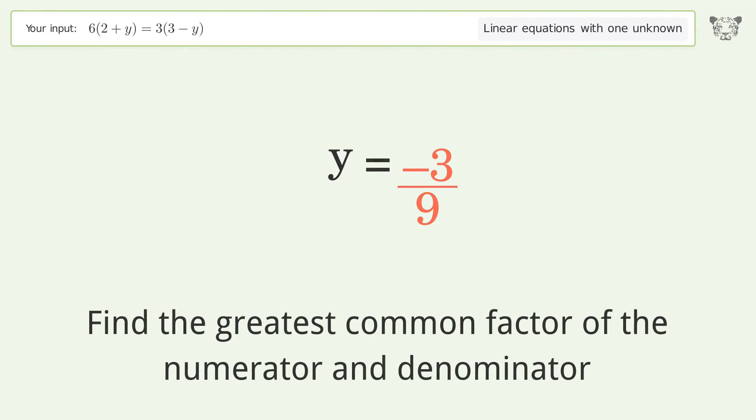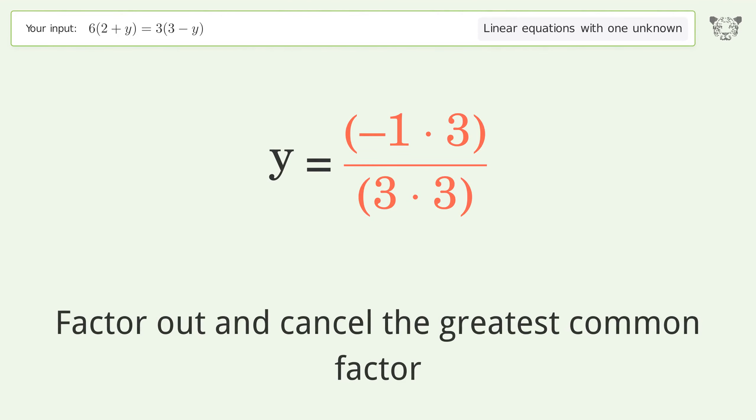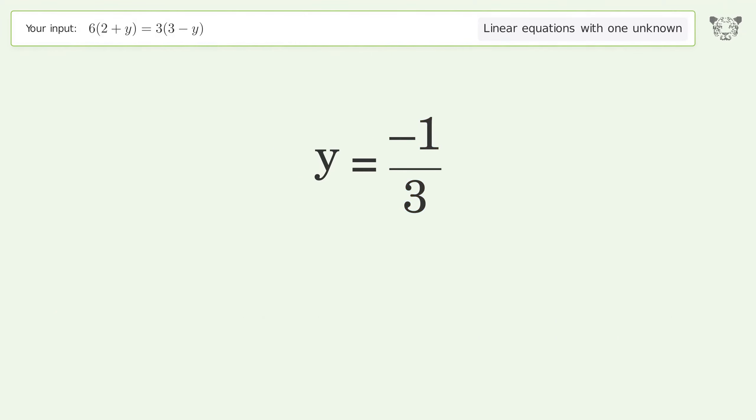Find the greatest common factor of the numerator and denominator. Factor out and cancel the greatest common factor. And so the final result is y equals negative 1 over 3.